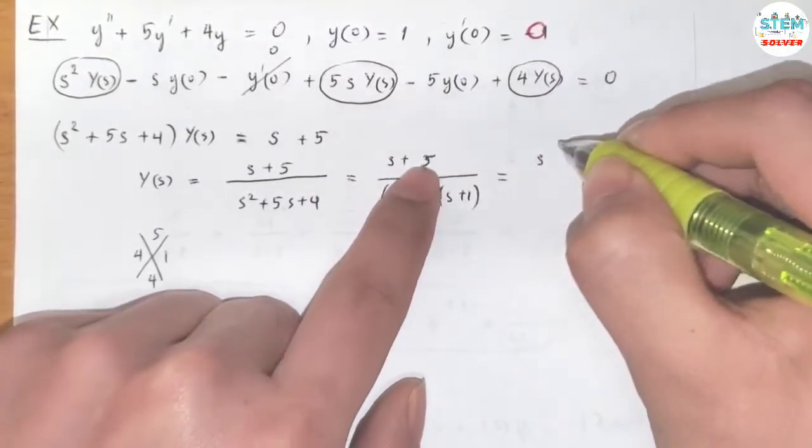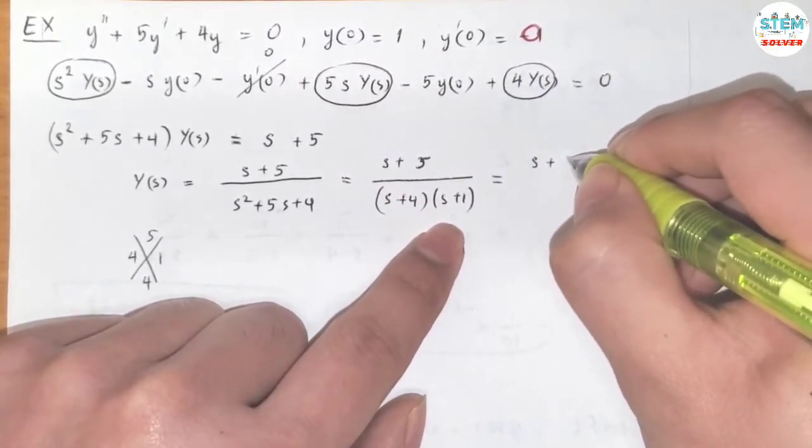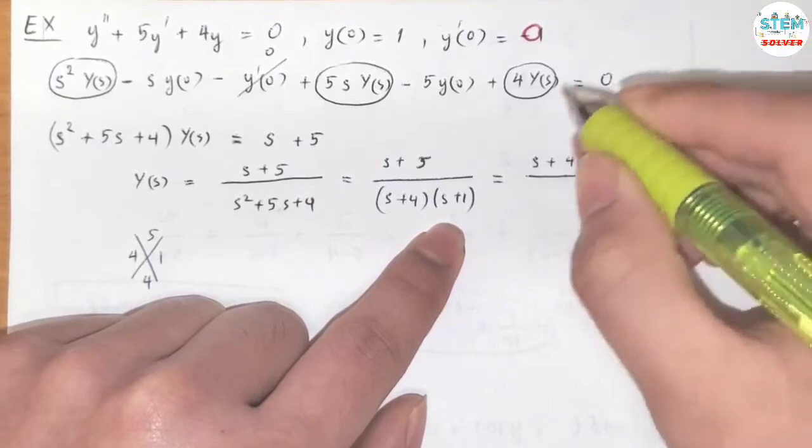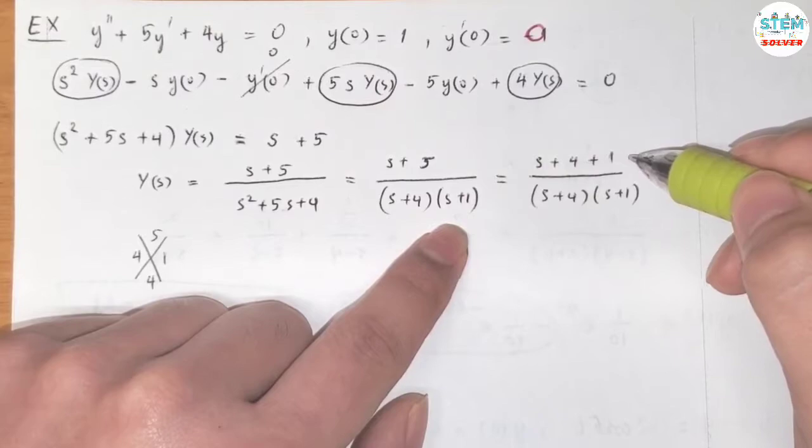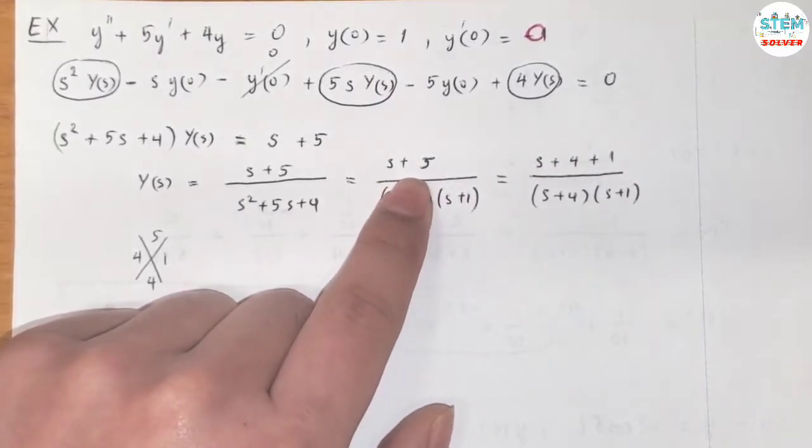So we have (s + 4), right? So I'm going to write 5 as (s + 4) + 1. You will see later why I do this. So (s + 4) + 1, which is s + 5. Everybody good here?